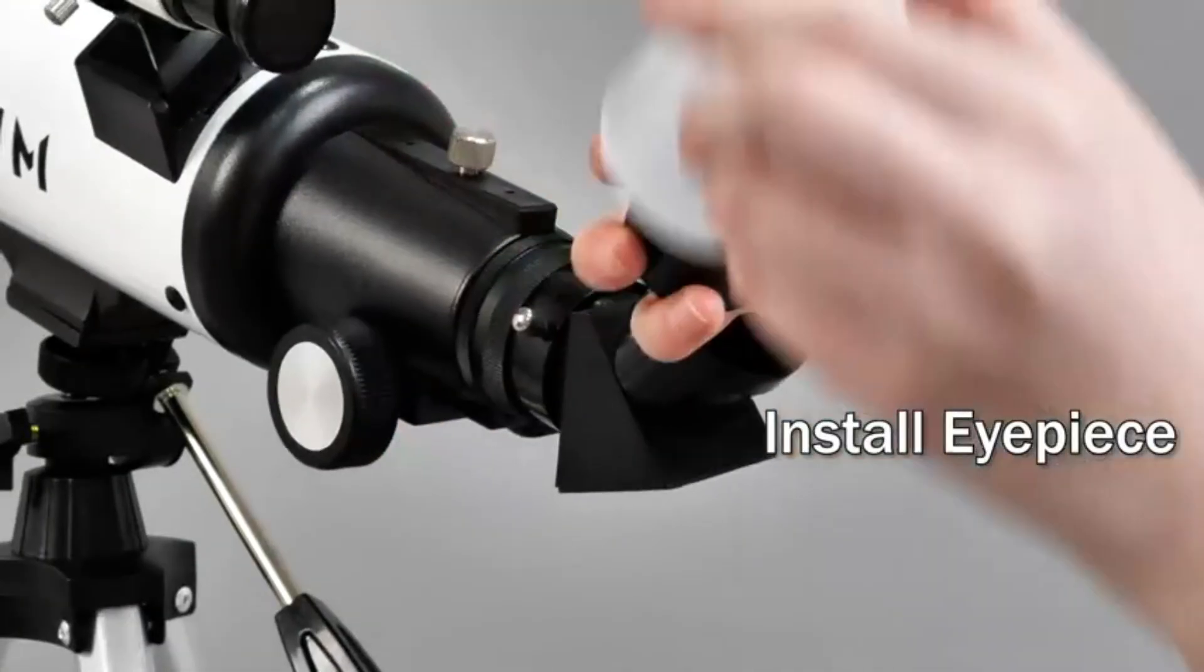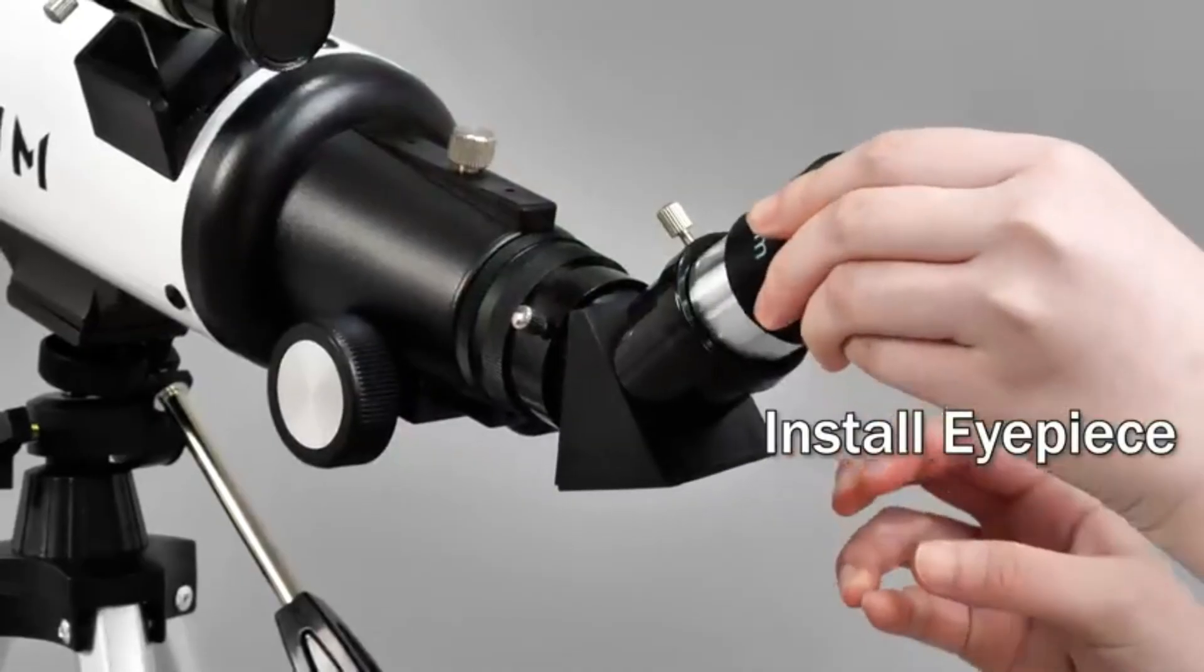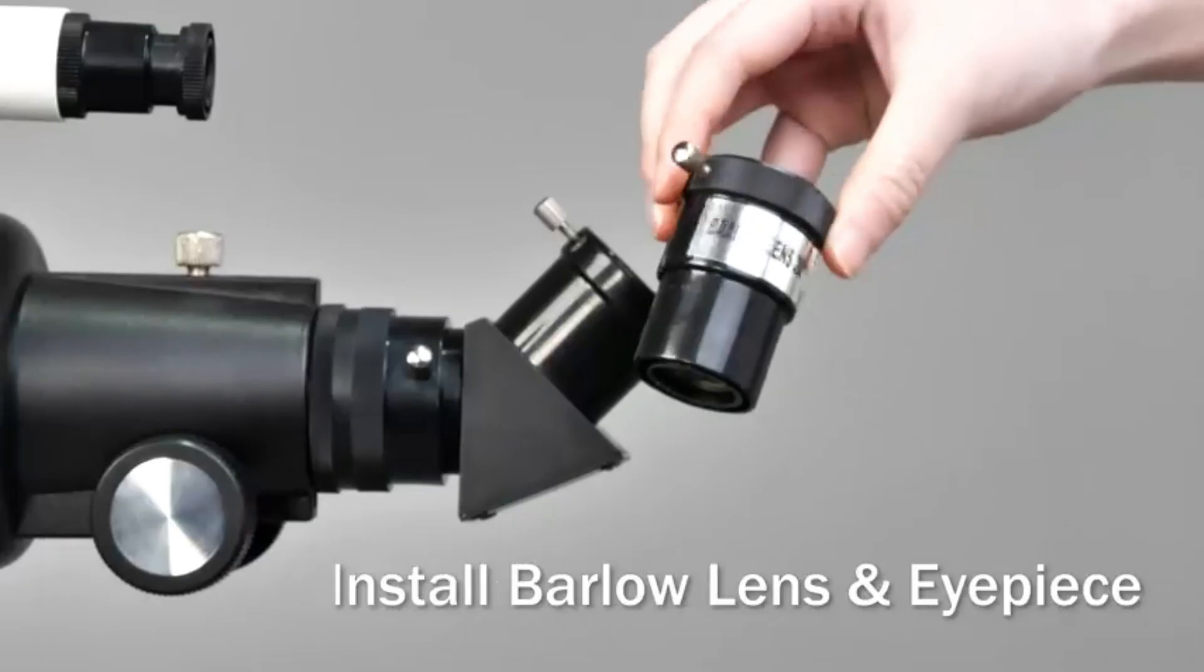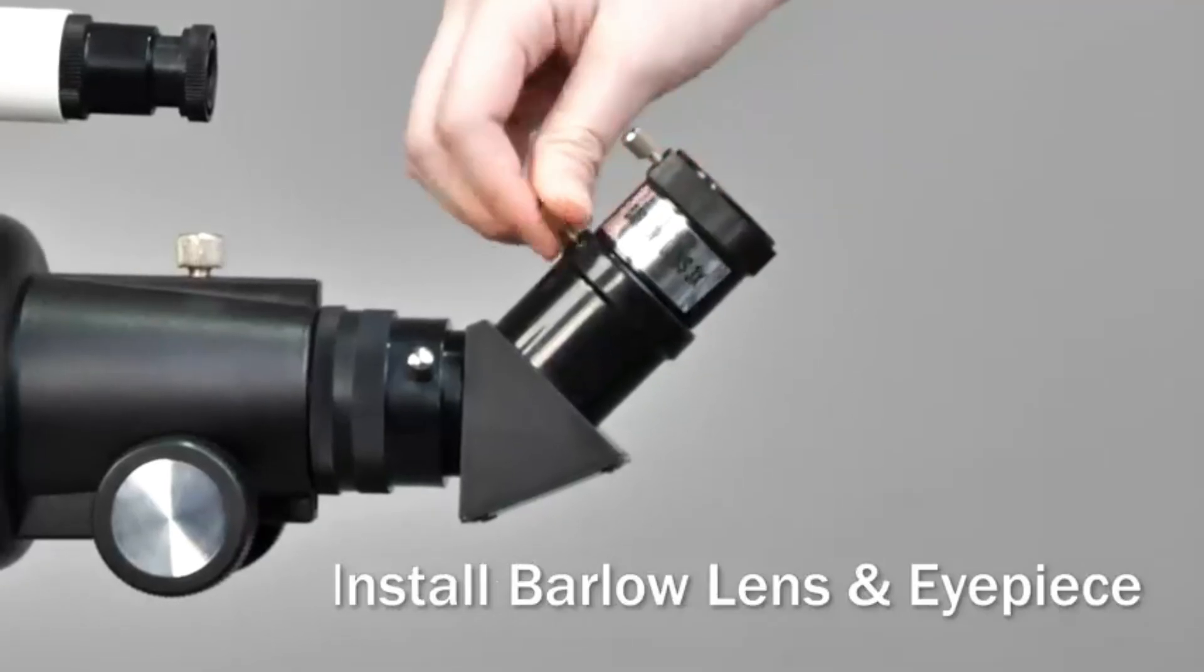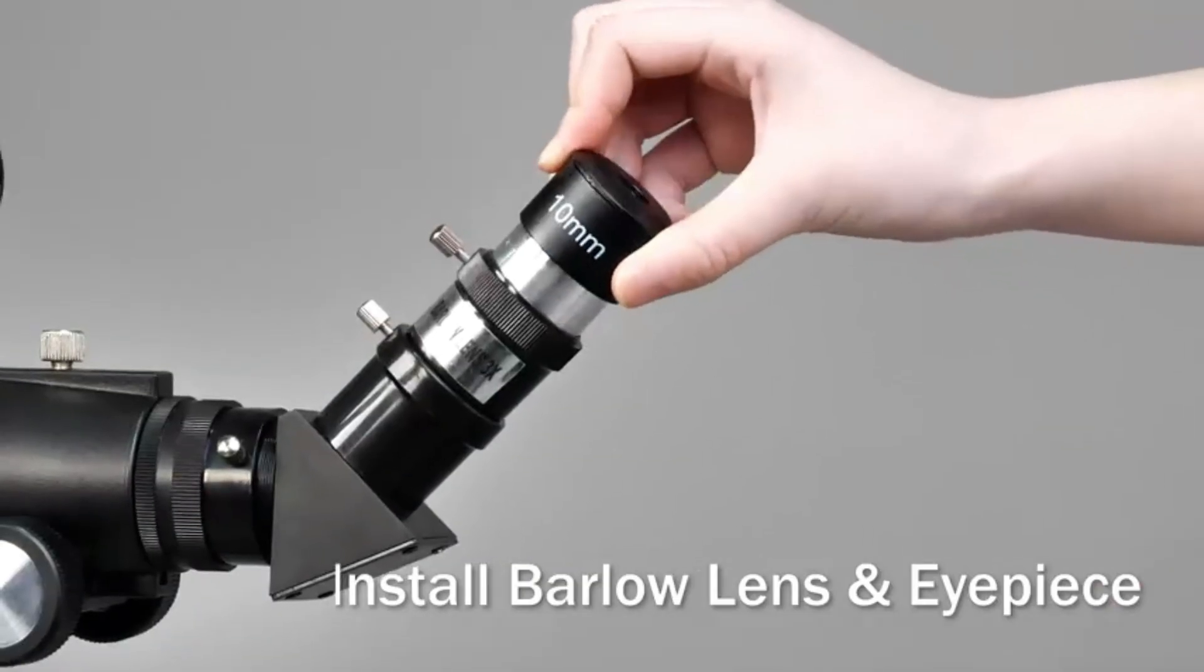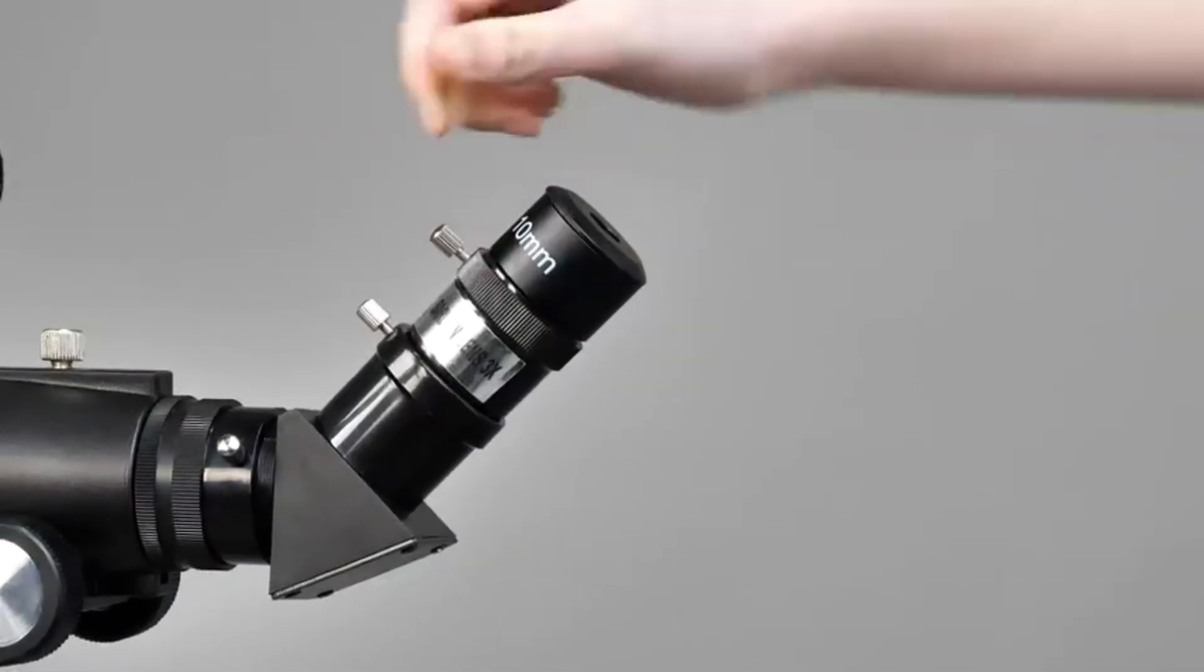Excellent optical quality, with a 600mm focal length, f/6.7, and 80mm aperture, this telescope captures more light for brighter images. The multi-layer fully coated all optical lenses enhance image clarity and brightness, offering stunning views of the night sky.